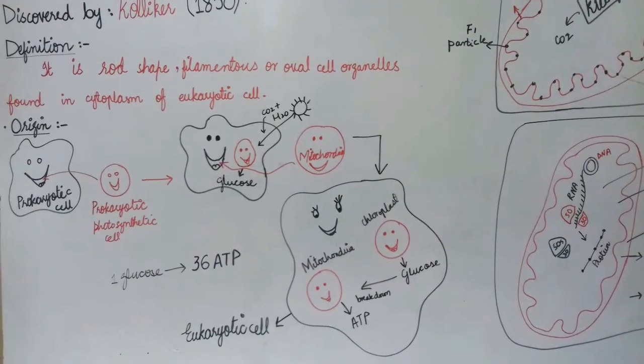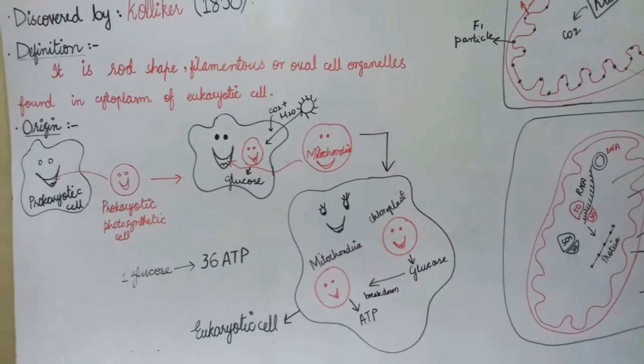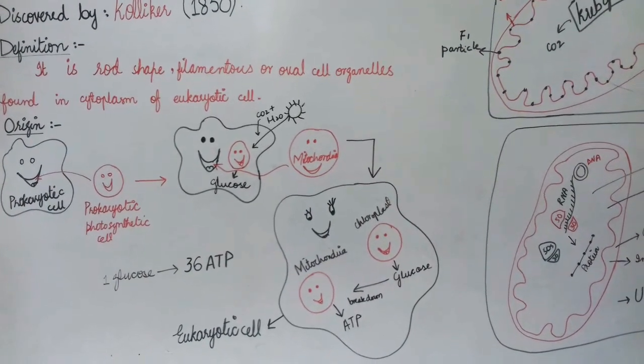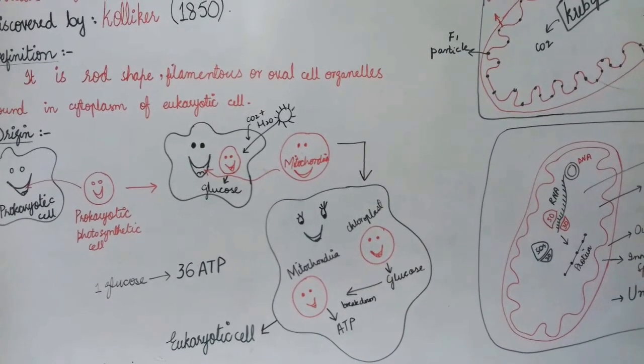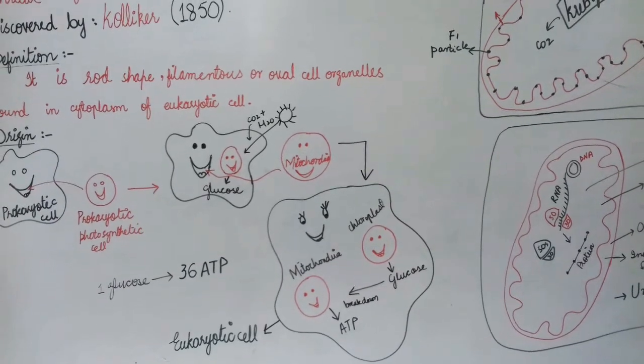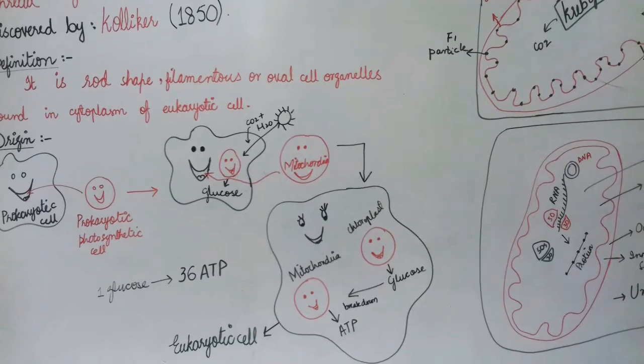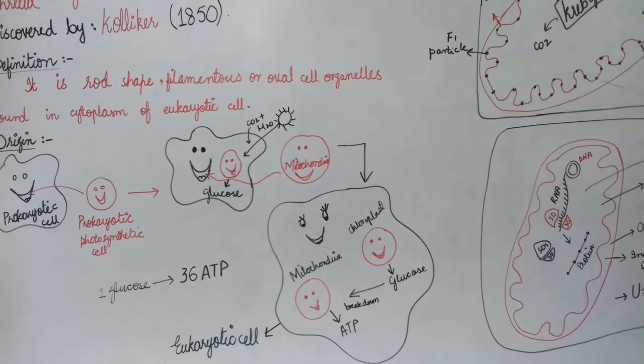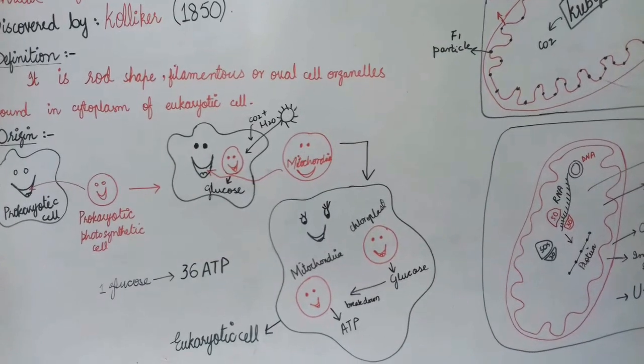Origination: How did it happen? First of all, a prokaryotic cell engulfed prokaryotic photosynthetic cells. Through this engulfing, the photosynthetic cell adopted a symbiotic relationship. The photosynthetic cell, in the presence of sunlight, carbon dioxide, and water, started glucose synthesis.